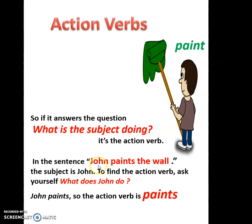In the sentence 'John paints the wall,' to find the action verb, you need to ask yourself: what does John do? John paints. So, the action verb is the word 'paints.' Paints is the action verb.